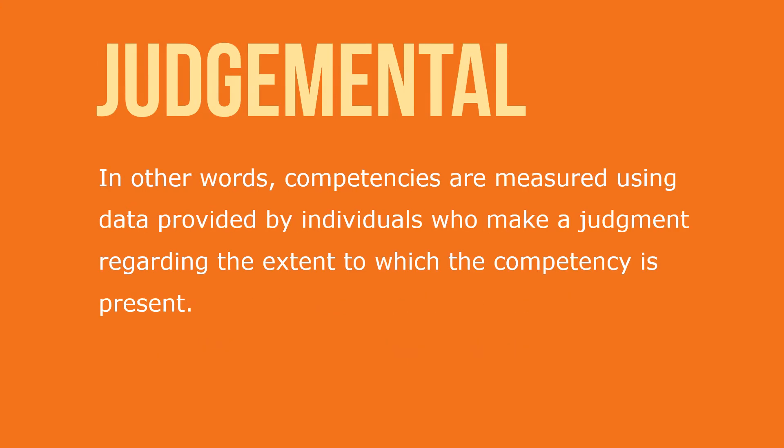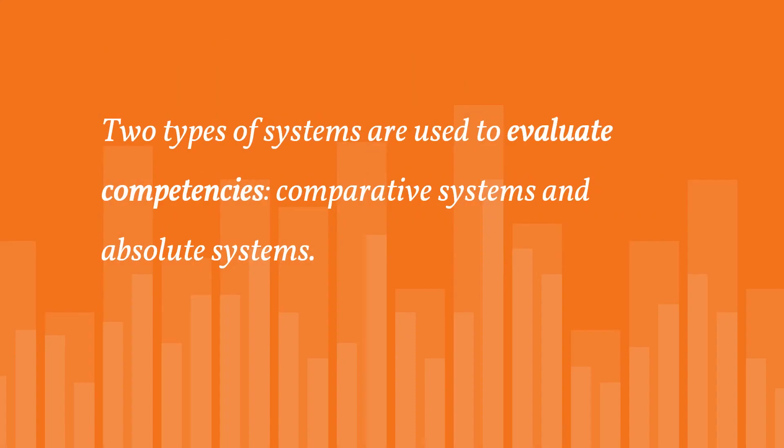In contrast to the measurement of results, the measurement of competencies is intrinsically judgmental. In other words, competencies are measured using data provided by individuals who make a judgment regarding the extent to which the competency is present. Two types of systems are used to evaluate competencies: comparative systems and absolute systems. Comparative systems base measurement on comparing employees to one another, whereas absolute systems base the measurement on comparing employees with a prescribed performance standard.